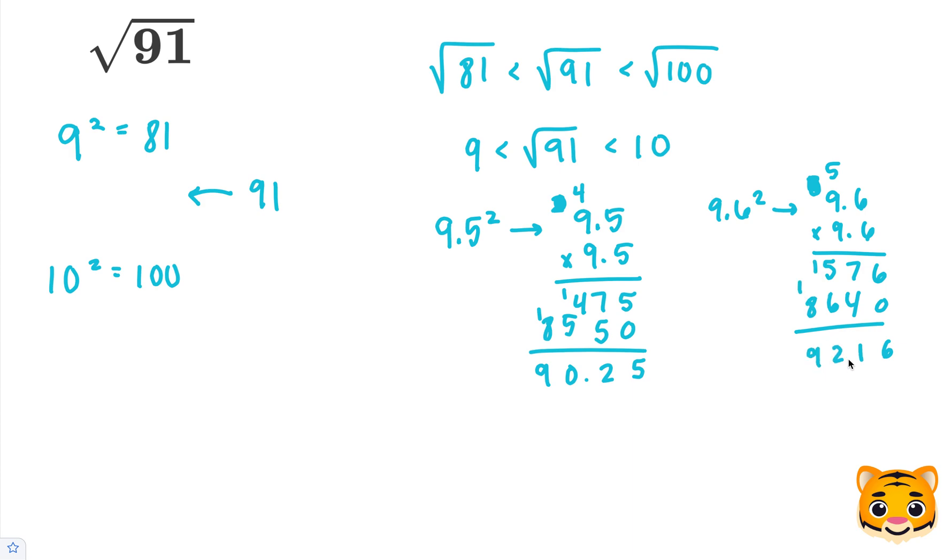So 92.16 is 1.16 away from 91, while 90.25 is 0.75 away. So we can see that 90.25 is a little bit closer to 91 than 92.16 is. So this 9.5 squared gives us approximately 91. So we can say that the square root of 91 is approximately 9.5.